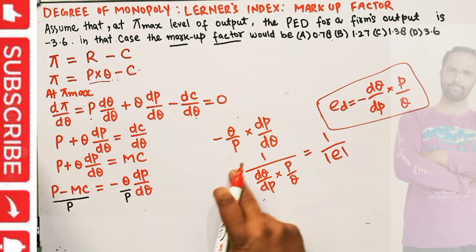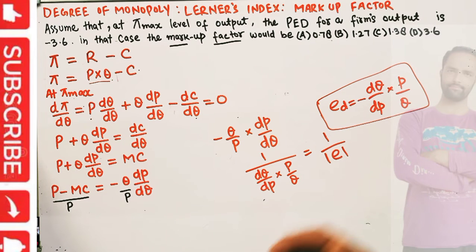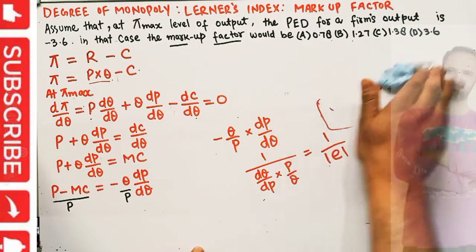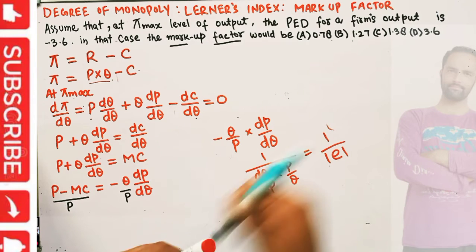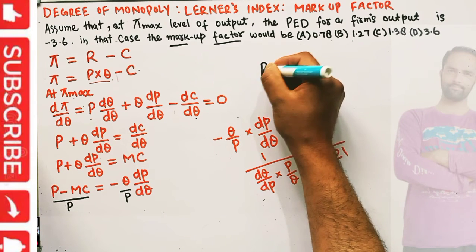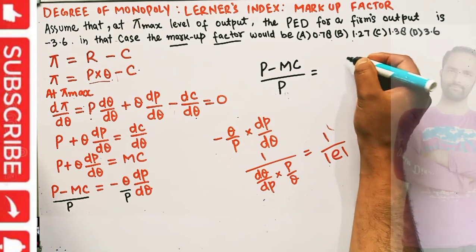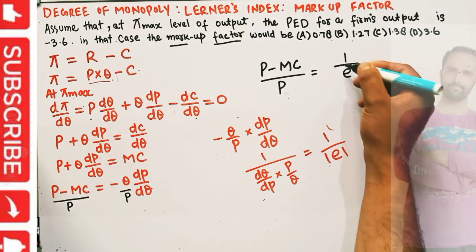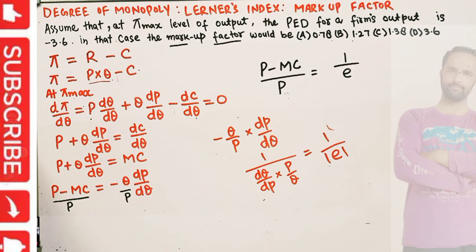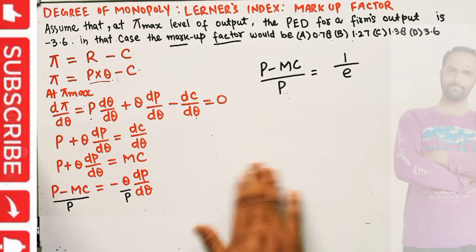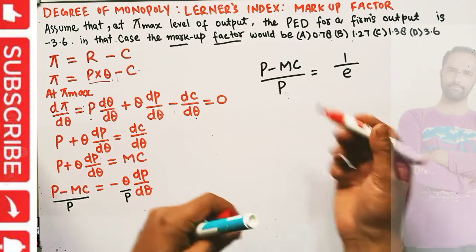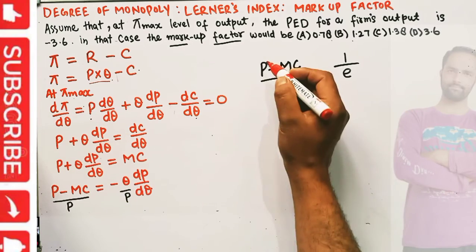Taking the absolute value, we arrive at: (p - MC)/p = 1/|e|. This is our Lerner's Index — the classic formulation showing the relationship between price, marginal cost, and price elasticity of demand.